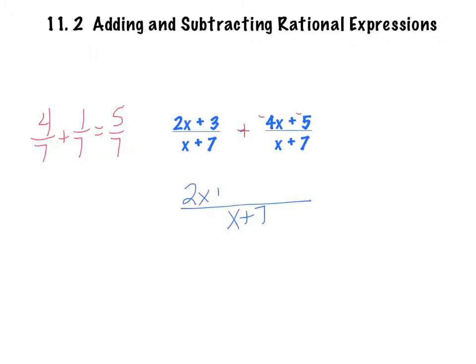What I end up with is x plus 7 for the common denominator, and on top: 2x plus 3 minus 4x minus 5. Then I combine like terms on the top — the denominator stays the same. I have 2x with negative 4x, that gives me negative 2x, and I have 3 and minus 5, that's minus 2.